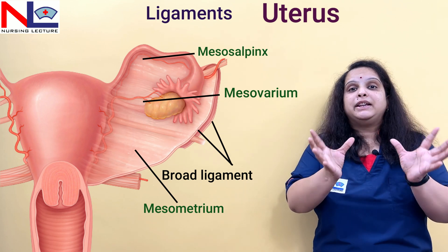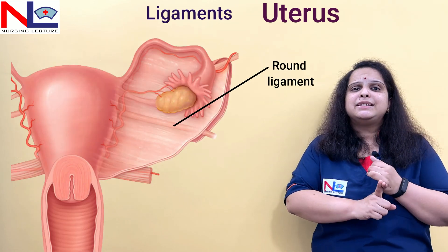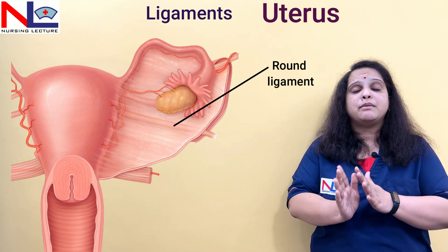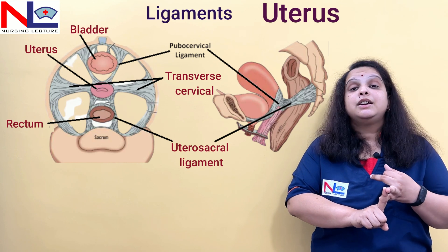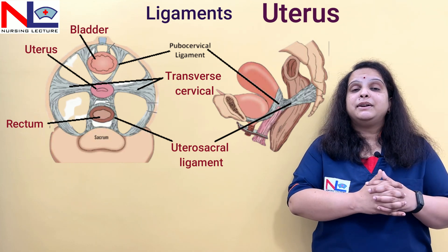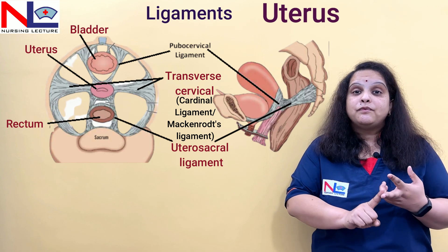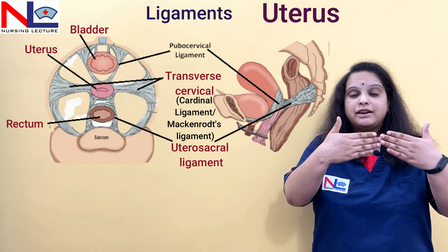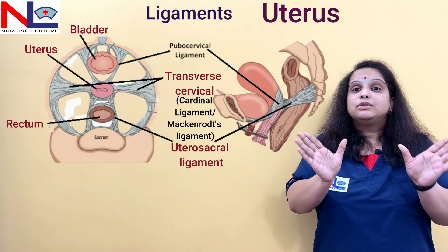The remaining part of the broad ligament that flares out on the lateral aspect of the uterus is the mesometrium. So these are the three parts of the broad ligament forming the peritoneal ligament. The other ligaments are fibromuscular ligaments. The round ligament extends from the cornua of the uterus to the labia majora. The uterosacral ligament extends from the posterior part of the cervix to the anterior part of the sacrum. The third is the transverse cervical ligament, also called the cardinal ligament or Mackenrodt's ligament, which runs transversely from the supra-vaginal part of the cervical region to the pelvic wall laterally.